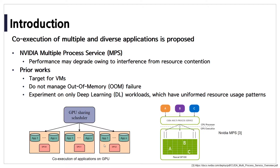Co-execution is where N applications are executed concurrently on a single GPU, as shown in the figure on the left. NVIDIA has proposed Multiple Process Service to execute multiple kernels concurrently. However, performance of this technique may degrade owing to interference from resource contention.